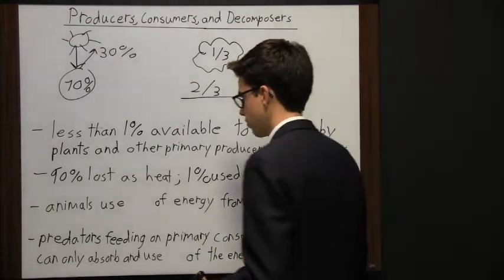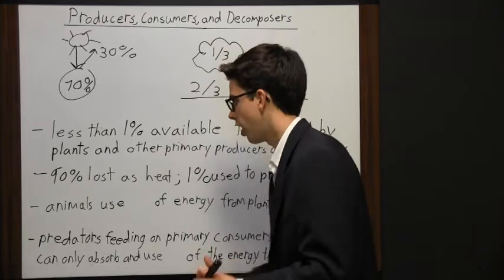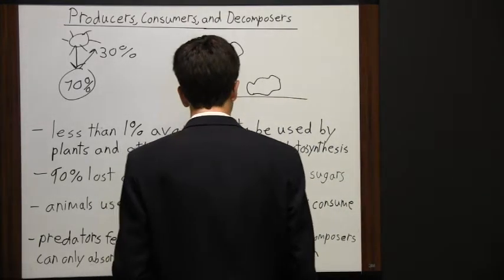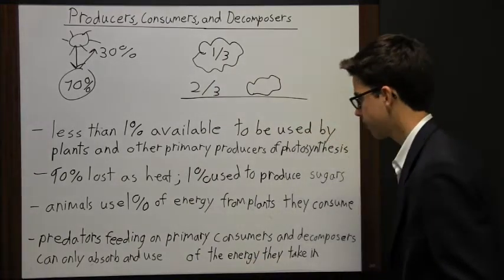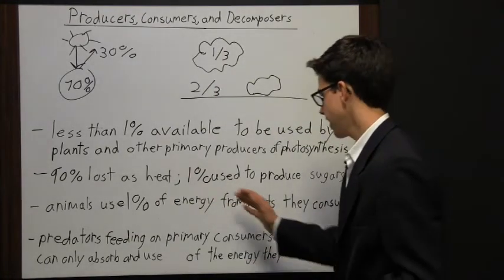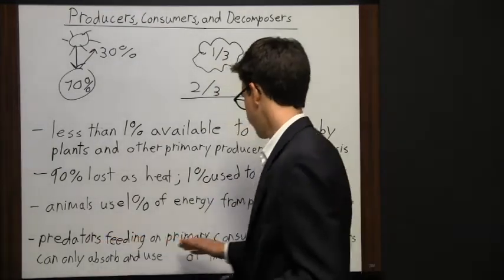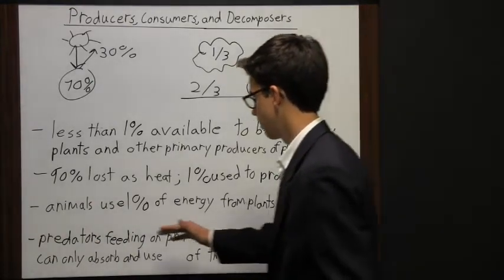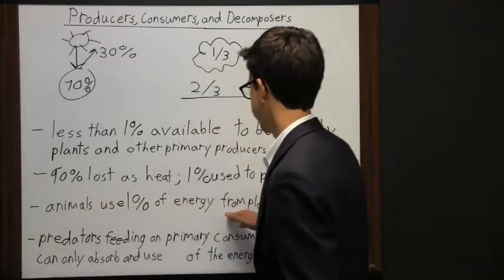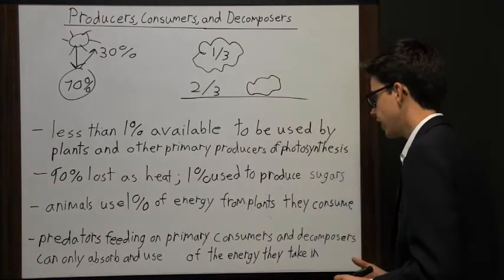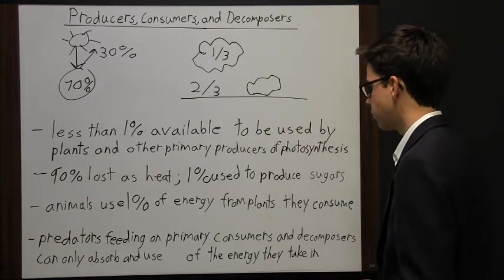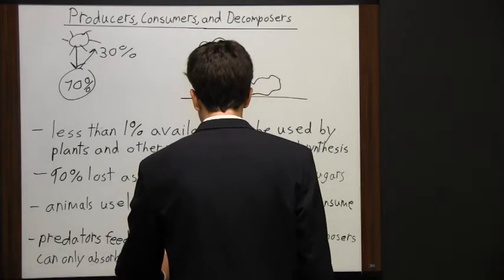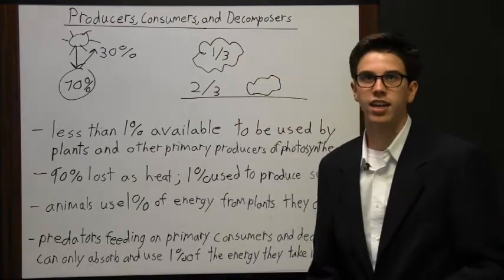Animals that consume plants — maybe a herbivore, maybe an omnivore — can only use one percent of the energy from the plants they consume. We have animals eating plants, and then predators that feed on primary consumers and decomposers. Of those predators feeding on primary consumers and decomposers, they can only absorb and use about one percent of the energy they take in.